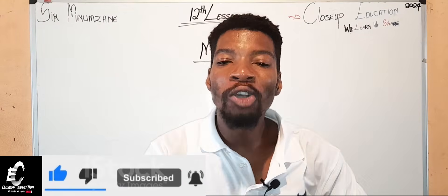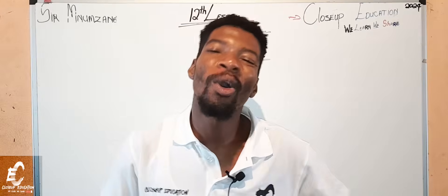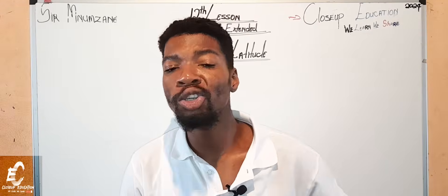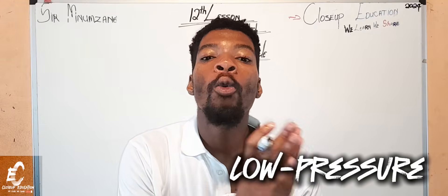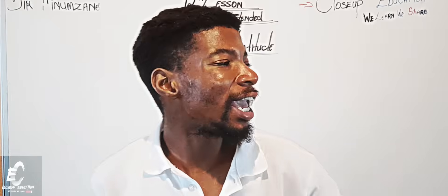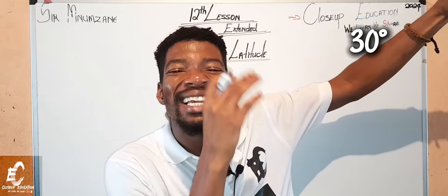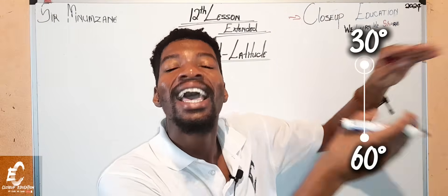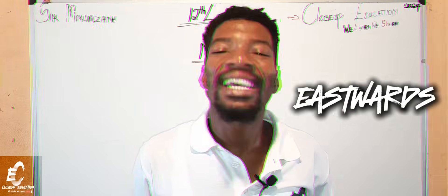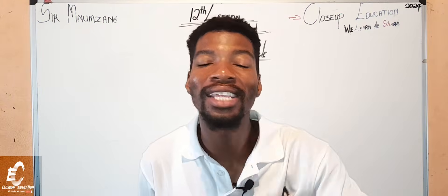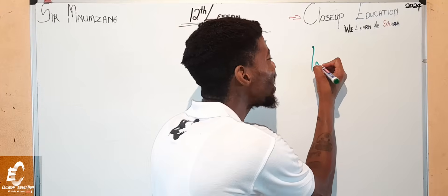What is a mid-latitude cyclone? A mid-latitude cyclone is a low pressure weather condition which occurs between 30 degrees to 60 degrees, and it moves eastward. There's no better way to start without speaking about the initial stage.